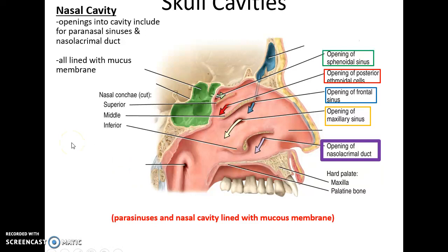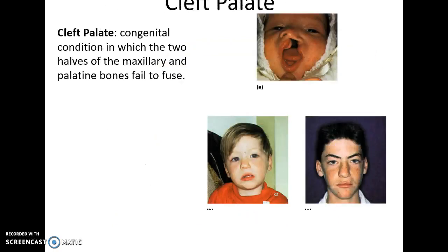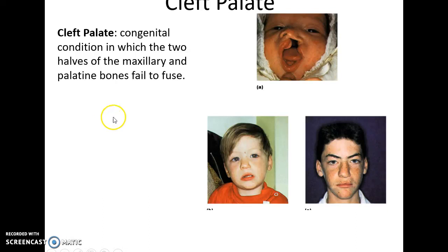There are openings to the nasal cavity besides the nostrils: all of the paranasal sinuses open and empty into the nasal cavity, and there is also an opening for the nasolacrimal duct — a tear duct that goes from the orbits and carries tear fluid to the nasal cavity. Cleft palate is a congenital condition where a person is born and the maxilla and palatine bones did not fuse properly, so the oral cavity is open to the nasal cavity. Fortunately it can be corrected after surgeries; the infant's hard palate is eventually repaired so that it is functional and normal.